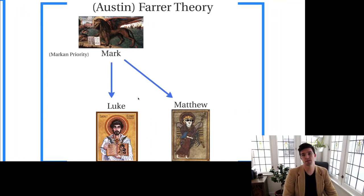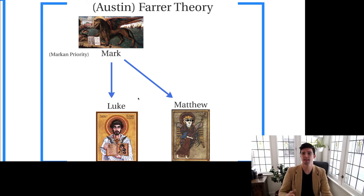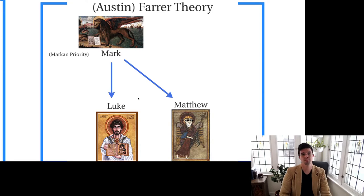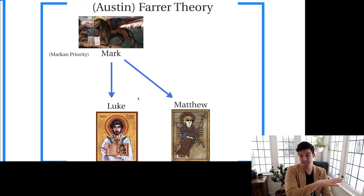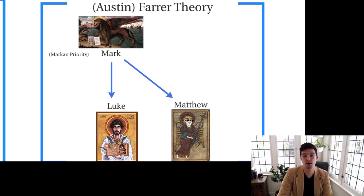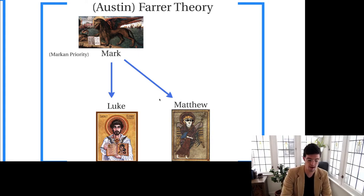The other main solution to the synoptic problem is the Farrer theory, the less popular of the two most common solutions — probably 30 to 40% of New Testament scholars hold to it. The Farrer theory has the same explanation for the triple tradition as the two-source theory: Luke and Matthew both use Mark independently of one another, so Marcan passages go into Luke and Marcan passages make their way into Matthew.